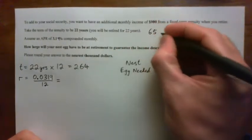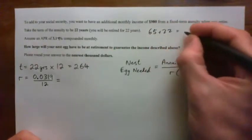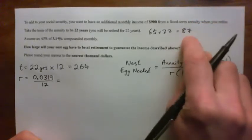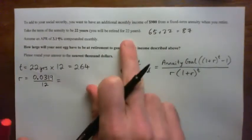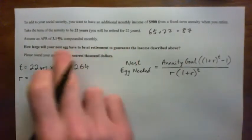Retired 65 plus 22 equals 87, better hope you're dead by 87. Right, I'm not a fan of these fixed income retirement accounts, you might know that.